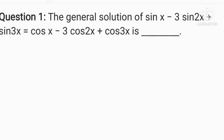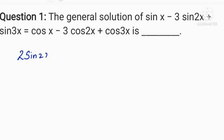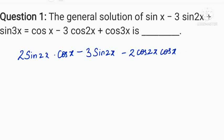Here we have the first question: the general solution of sin x minus 3 sin 2x plus sin 3x equals cos x minus 3 cos 2x plus cos 3x. We bring all the terms to the same side and write it as 2 sin 2x into cos x minus 3 sin 2x minus 2 cos 2x into cos x plus 3 cos 2x equals 0.